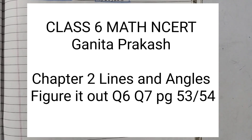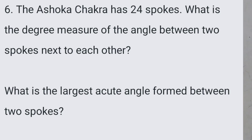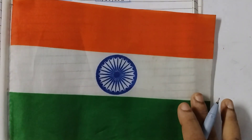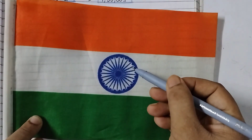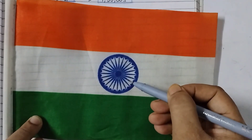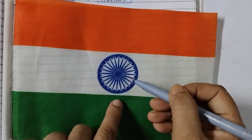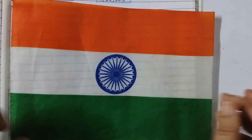Let's get started with question number 6. The Ashoka Chakra has 24 spokes. What is the degree measure of the angle between two spokes next to each other? What is the largest acute angle formed between two spokes? We can see the Ashoka Chakra in our Indian flag. This is the Indian flag and you can see the Ashoka Chakra here. Now these are the spokes — if you count them, you will find there are 24 spokes.